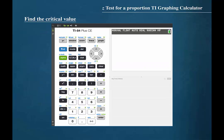In order to find the critical value, we will press 2nd VARS. We will be using the inverse normal function, so we should press 3.